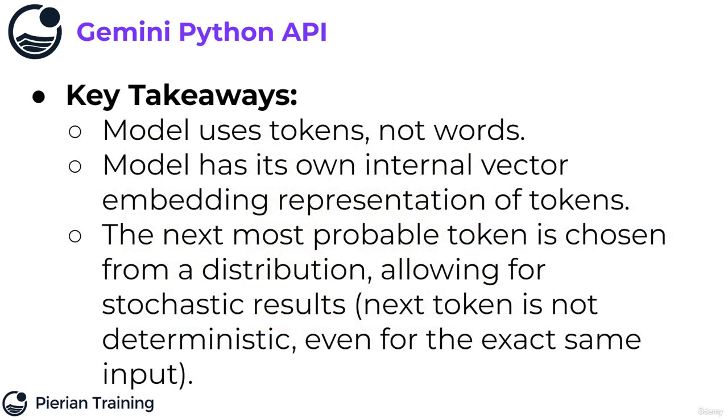So what are the key takeaways that you should know? You should understand that the model internally is using tokens and not words. And the model has its own internal vector representation of these tokens, known as a vector embedding. And that the next most probable token is chosen from a distribution. That allows for what is known as stochastic results. That is to say, the next token is not guaranteed to 100% always be the same. In other words, it is not a deterministic process.